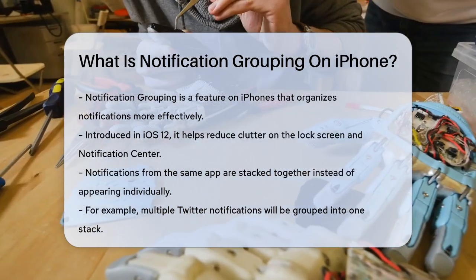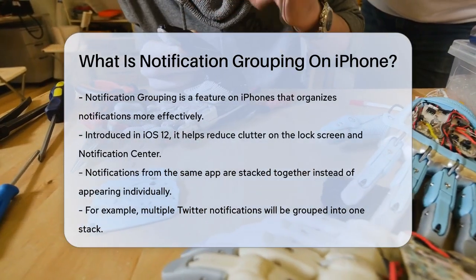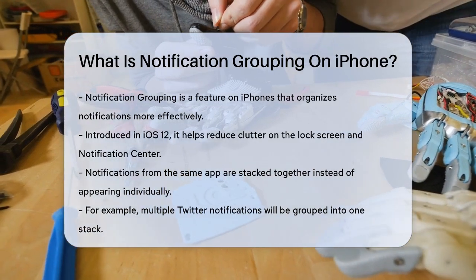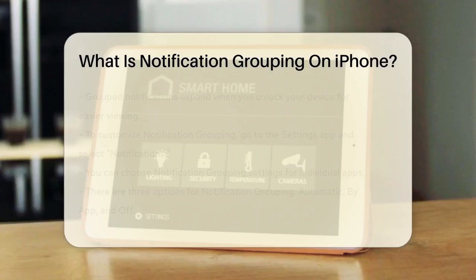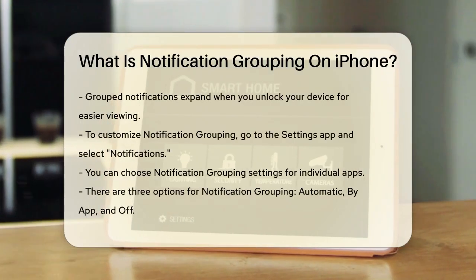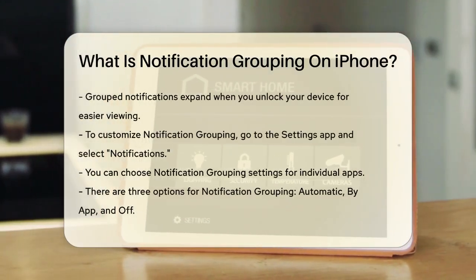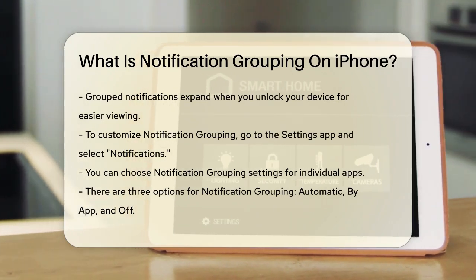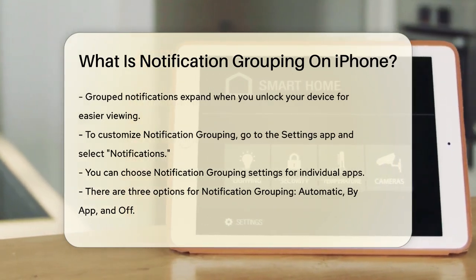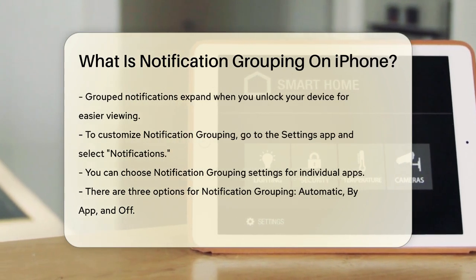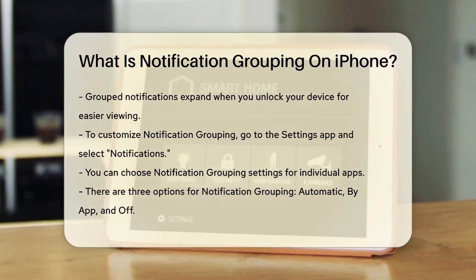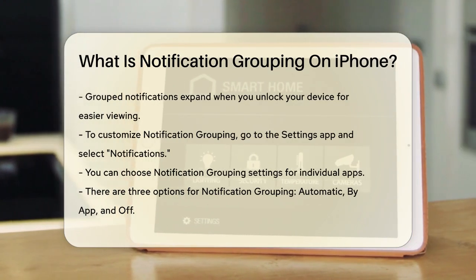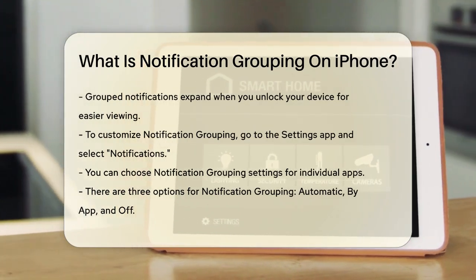Here's how it works. When you have multiple notifications from the same app, they are stacked together. For example, if you have several notifications from Twitter, they will be grouped into one stack rather than appearing as individual notifications. On the lock screen, these grouped notifications will expand when you unlock your device. In the notification center, you can tap on the bundle to see all the individual notifications.